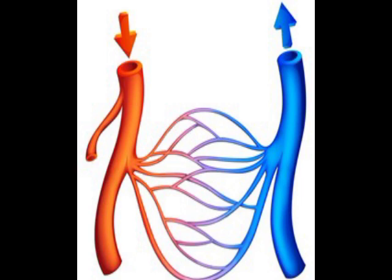They are mainly of three types: arteries, veins, and capillaries. Arteries are thick-walled blood vessels.